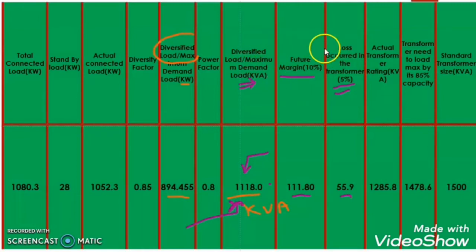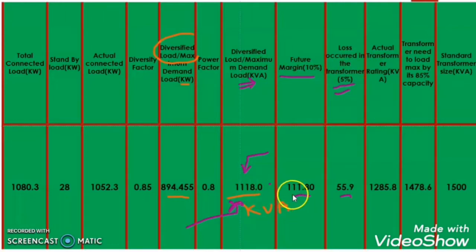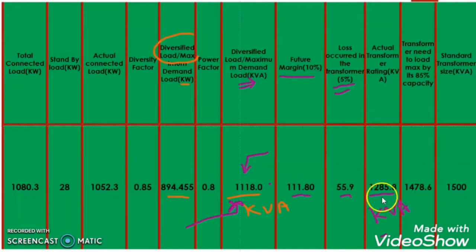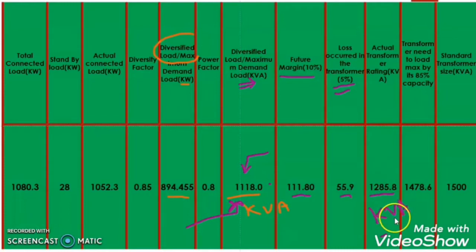Now, what is the actual load on the transformer considering the future margin and the loss margin? This will be diversified load in kVA plus the future margin plus the transformer losses. So it will be 1118 plus 111.8 plus 55.9, giving an actual load on the transformer of 1285.8 kVA. If we select a transformer of exactly 1285.8 kVA, it would have to run at 100% capacity all the time, which is not recommended for electrical equipment.